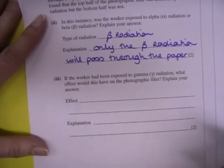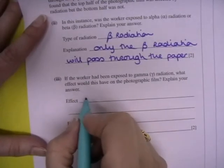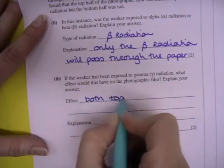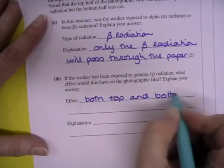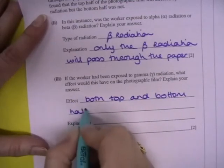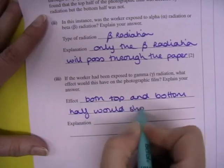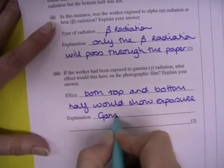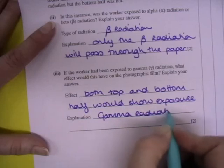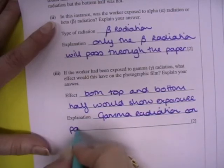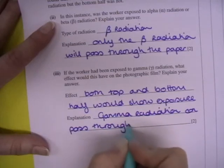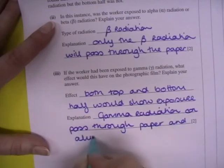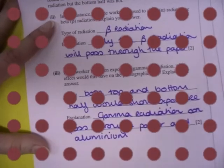Gamma will penetrate through both paper and aluminum. So we would expect to see exposure on both the top and the bottom half. So both the top and the bottom half would show exposure. And the explanation: gamma radiation can pass through paper and through the aluminum because it has a greater penetrating power.